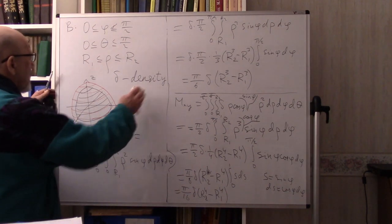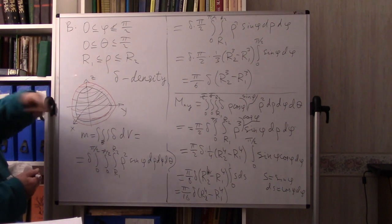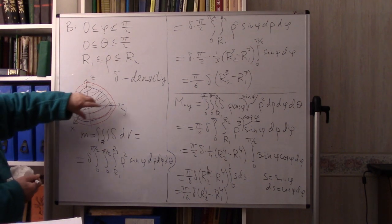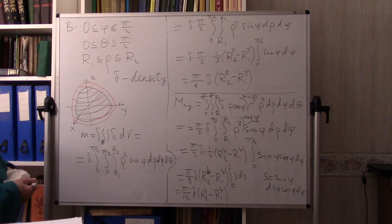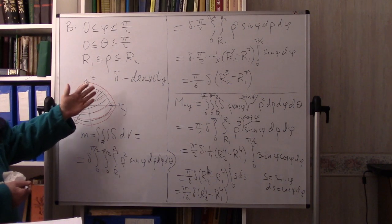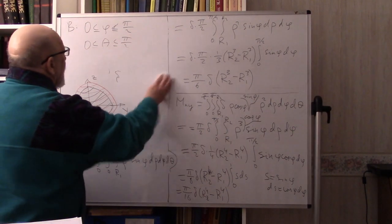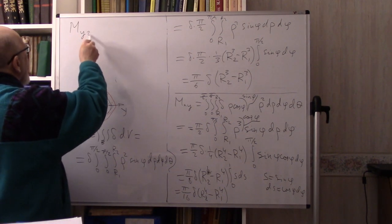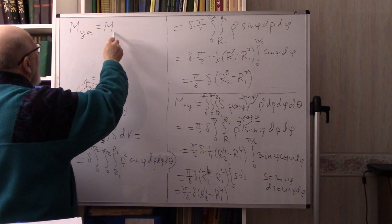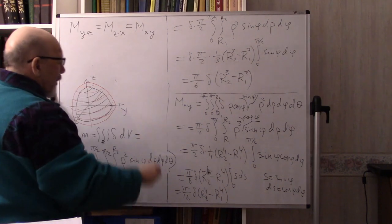By the way, this domain is symmetric — if you permute x, y, z cyclically you get the same domain. This means the moments with respect to the other two planes are equal: M_yz = M_zx = M_xy.